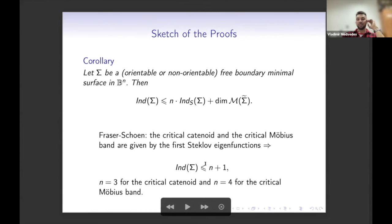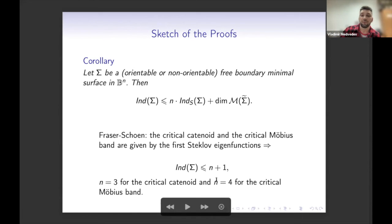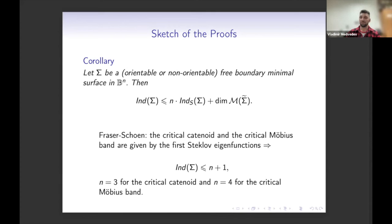Combined with the lower bounds already established, we conclude: the index of the critical Möbius band equals 5, and this also gives another proof that the index of the critical catenoid equals 4. Thank you for your attention; I am ready for questions.